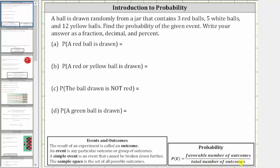For part A, we're asked to find the probability a red ball is drawn. Because there are a total of three red balls out of a total of three plus five plus 12, or 20 balls, the probability a red ball is drawn is three divided by 20, or three-twentieths.